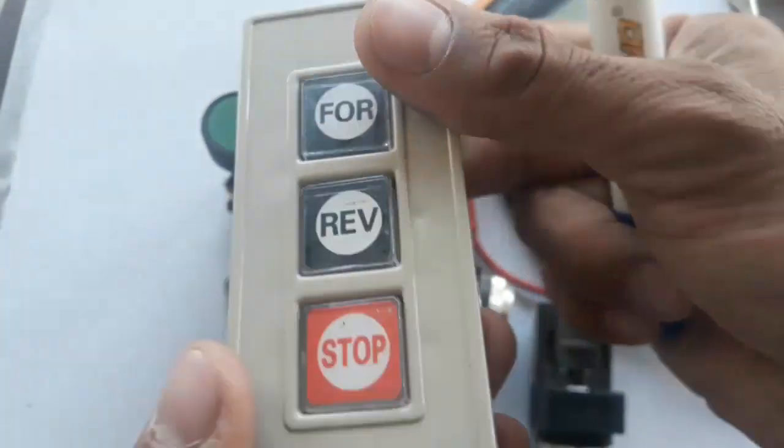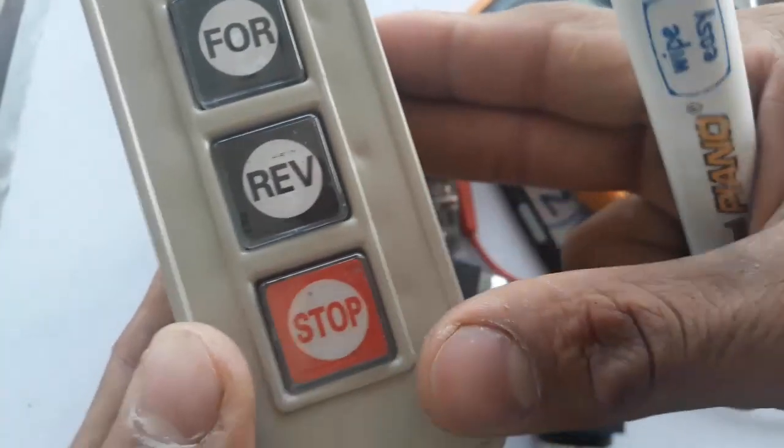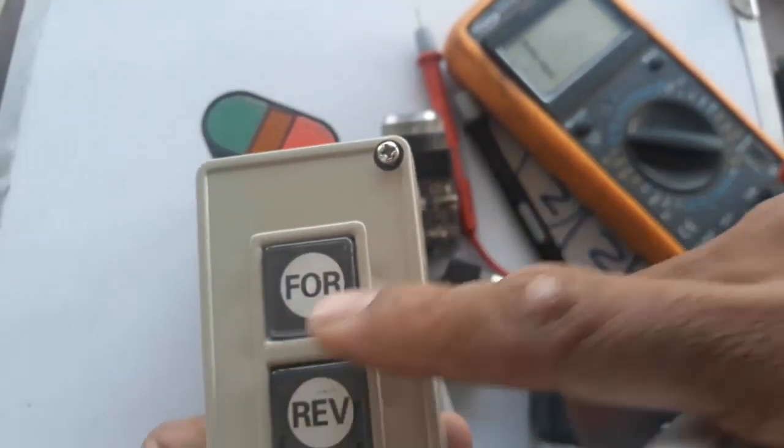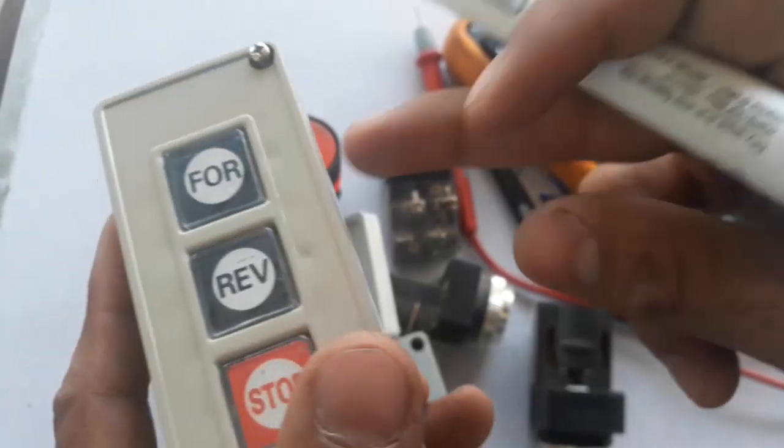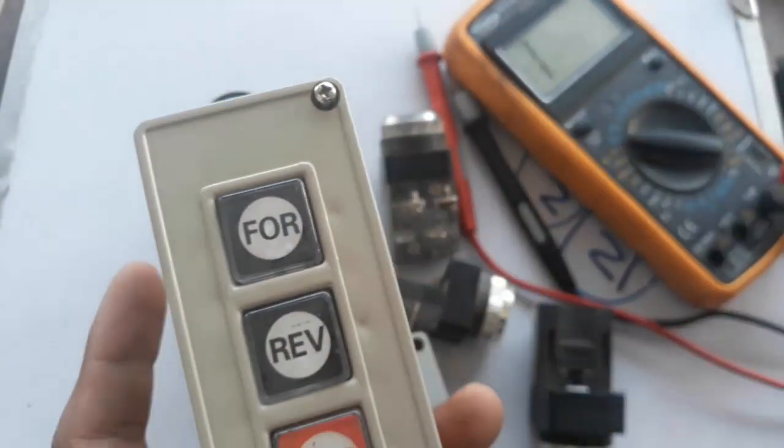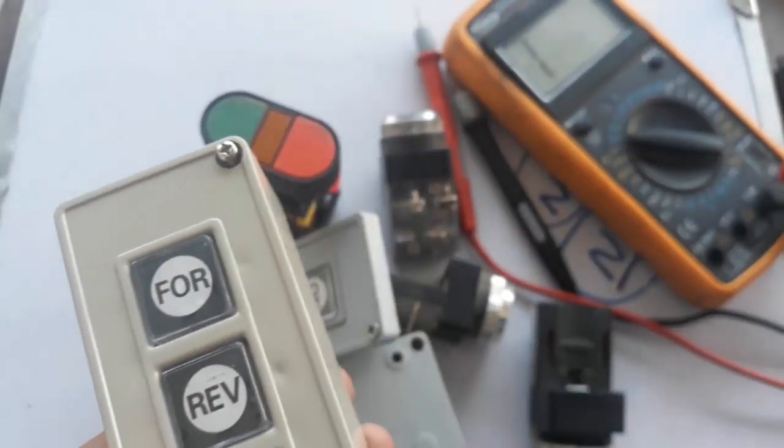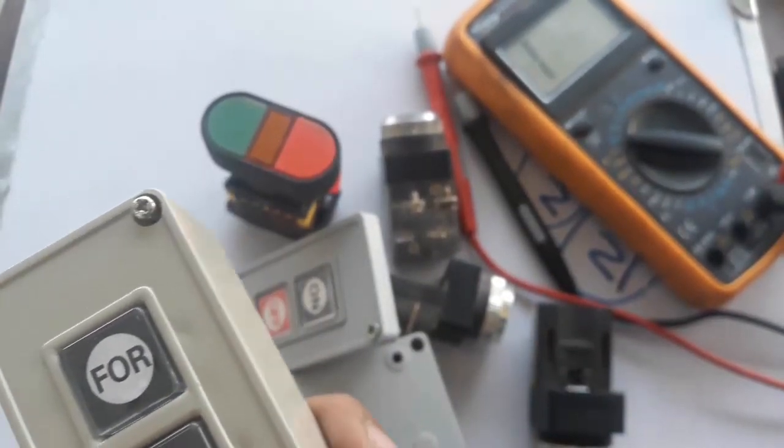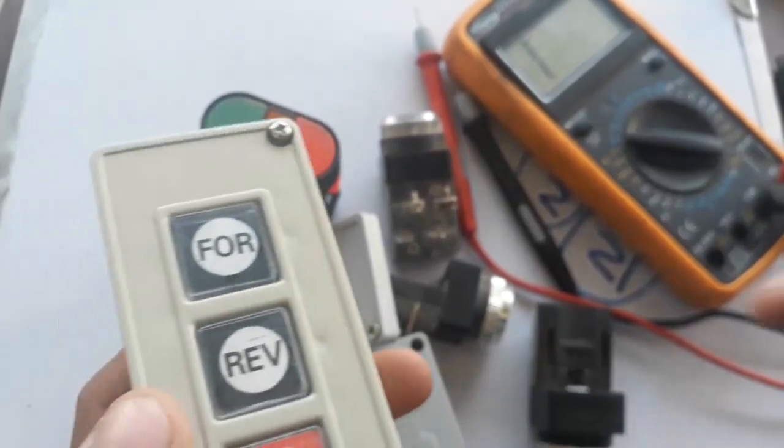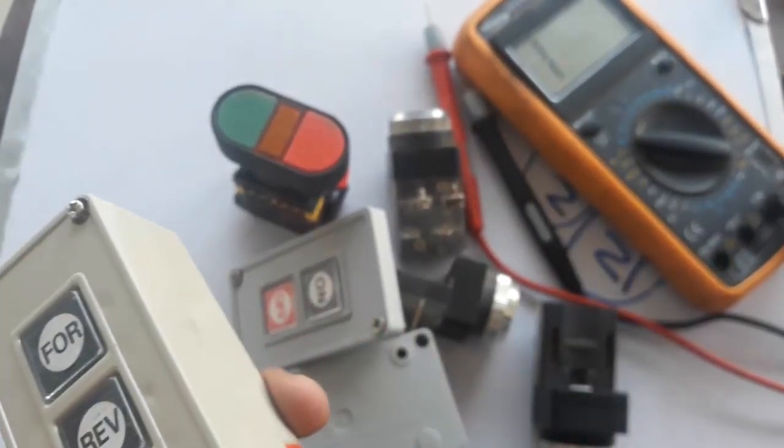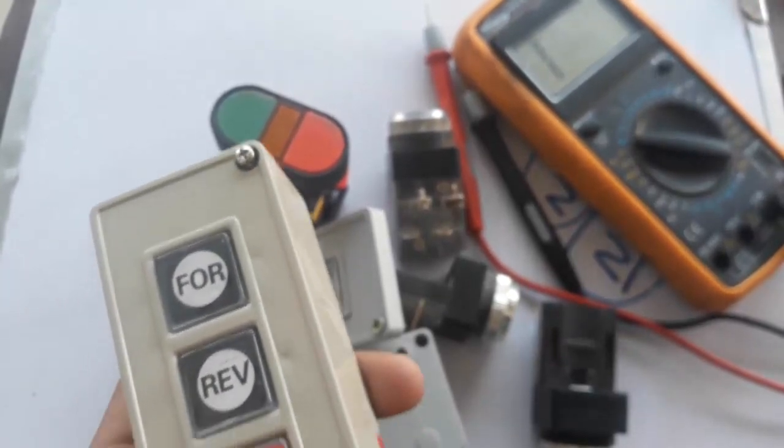This is called a forward-reverse switch for a three-phase motor. So basically, if I make a starter for forward-reverse, it will be used for forwarding and reversing the motor. When I push it, the motor will run forward or it will energize the forward contactor, and if I push this reverse switch, it will run the motor on reverse side.